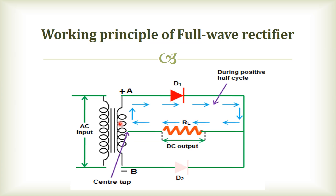During the positive half cycle, current flows only in the upper part of the circuit. The lower part of the circuit carries no current to the load because diode D2 is reverse biased. Thus, during the positive half cycle of the input AC signal, only diode D1 allows electric current, while diode D2 does not allow electric current.